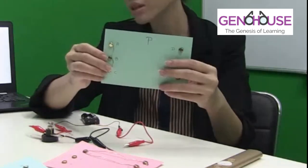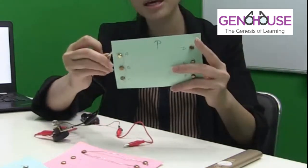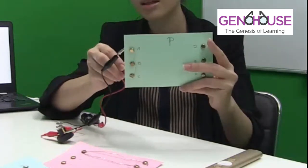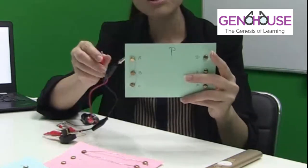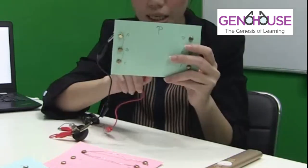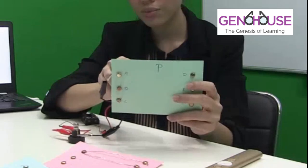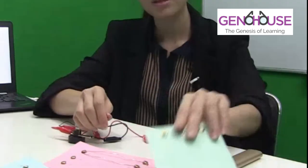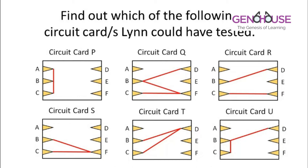So this is a circuit card. What it means is that when clips A and B are placed on those points, the light bulb will not light up. If I clip onto circuit card P and the light bulb lights up, that immediately tells me this is not the card Lynn used. To speed up the process, I usually look for results that are unique among all the results in the table.